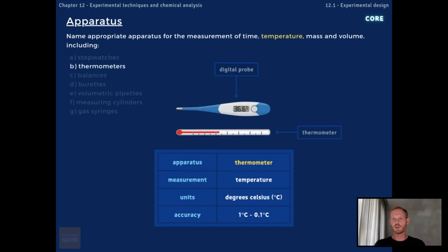Temperature is measured using a thermometer or digital temperature probe. The units of temperature are degrees Celsius. Traditional thermometers are generally accurate to the nearest degree, while precise thermometers give readings to the nearest 0.1 degree.